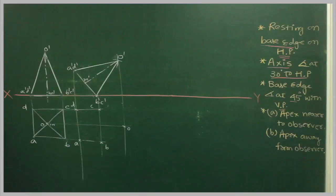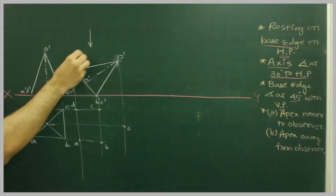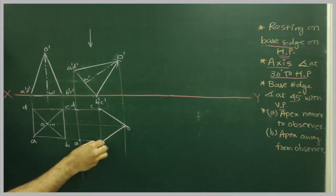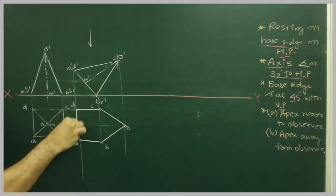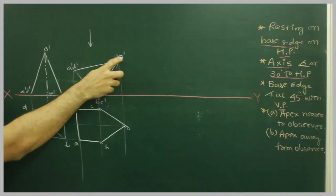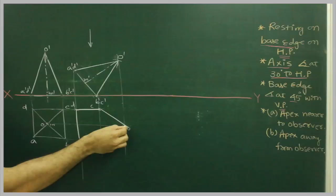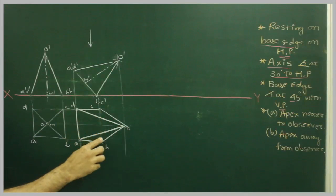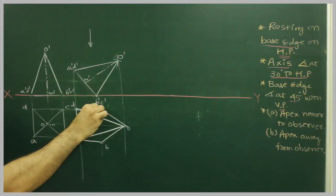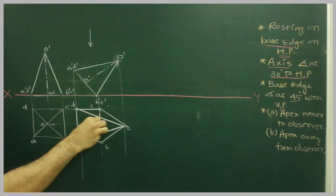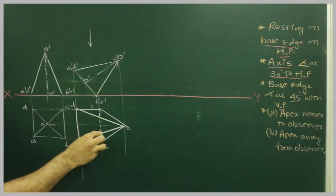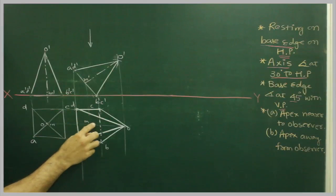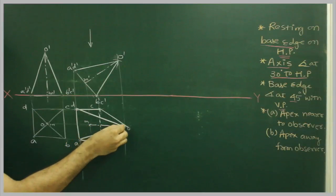Now what we have to do: if the observer is seeing from the top, all the lower boundary lines would be shown. When you see from the top, O-dash, A-dash and O-dash D-dash are nearer to you, so OD and OA will be nearer to you. And B-dash, C-dash is away from you, so that would be shown in the top view. After that we project M-dash from here to get M, and draw the axis.